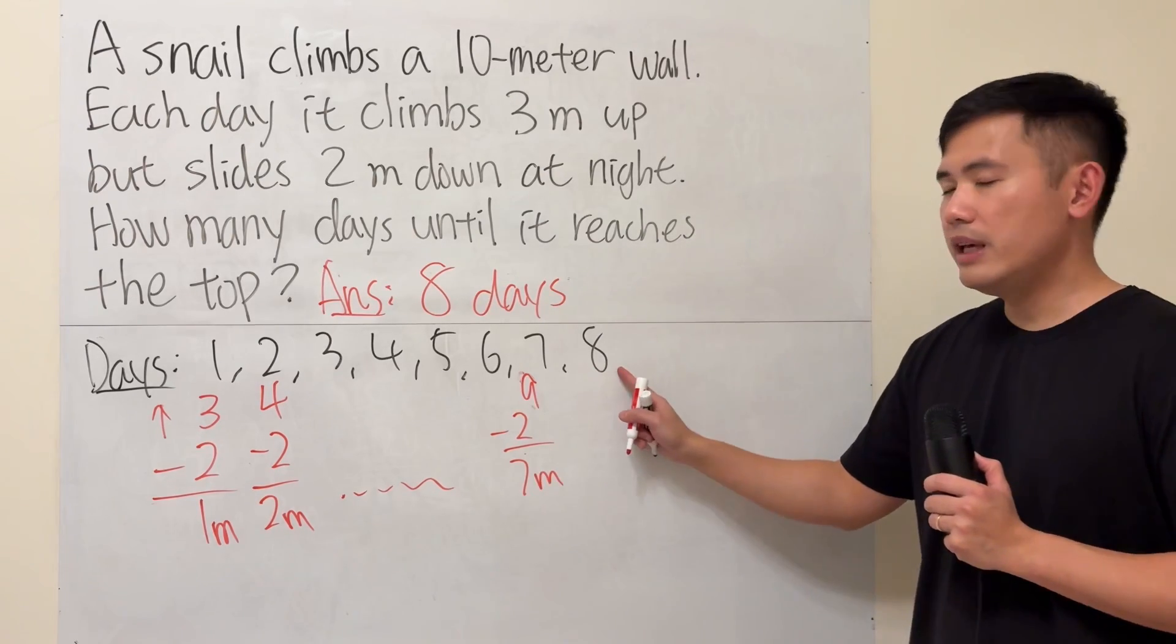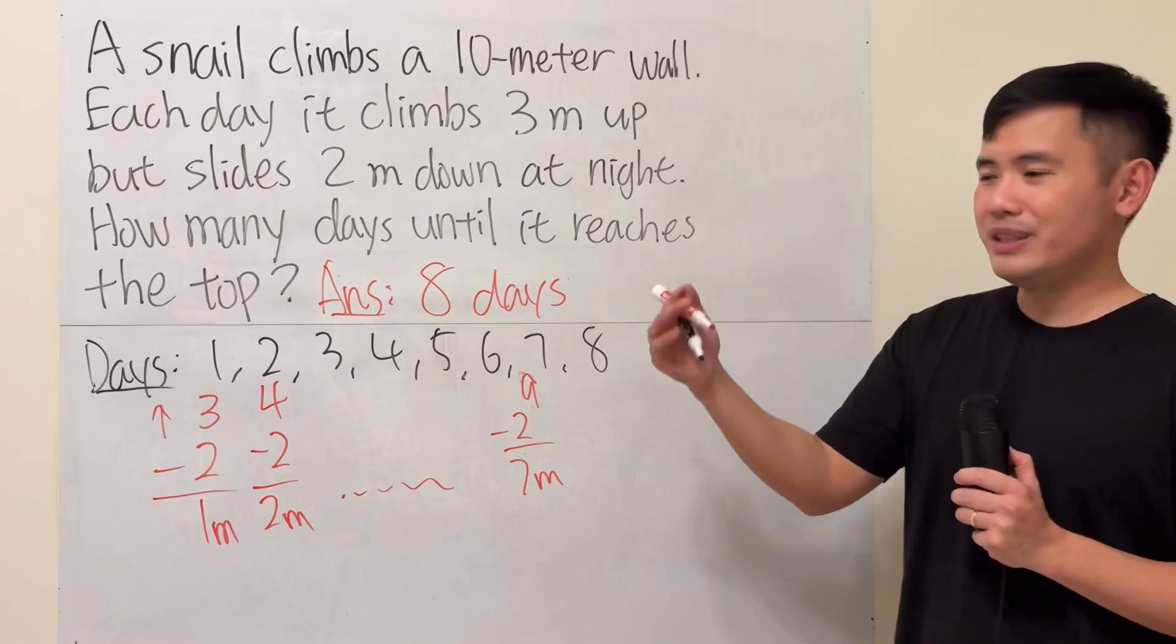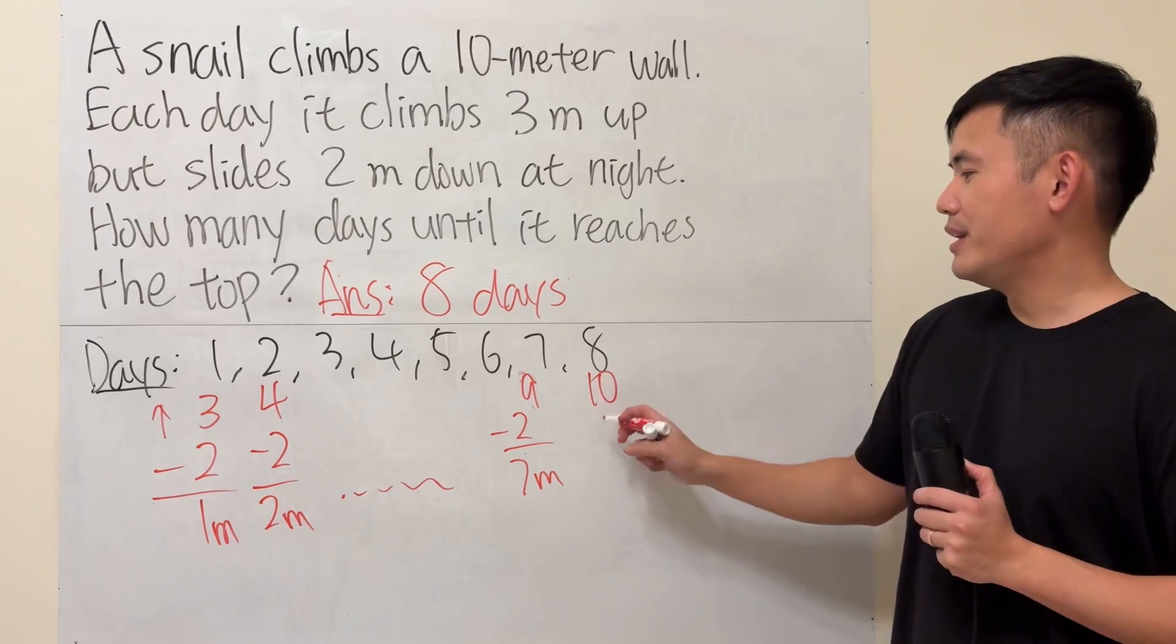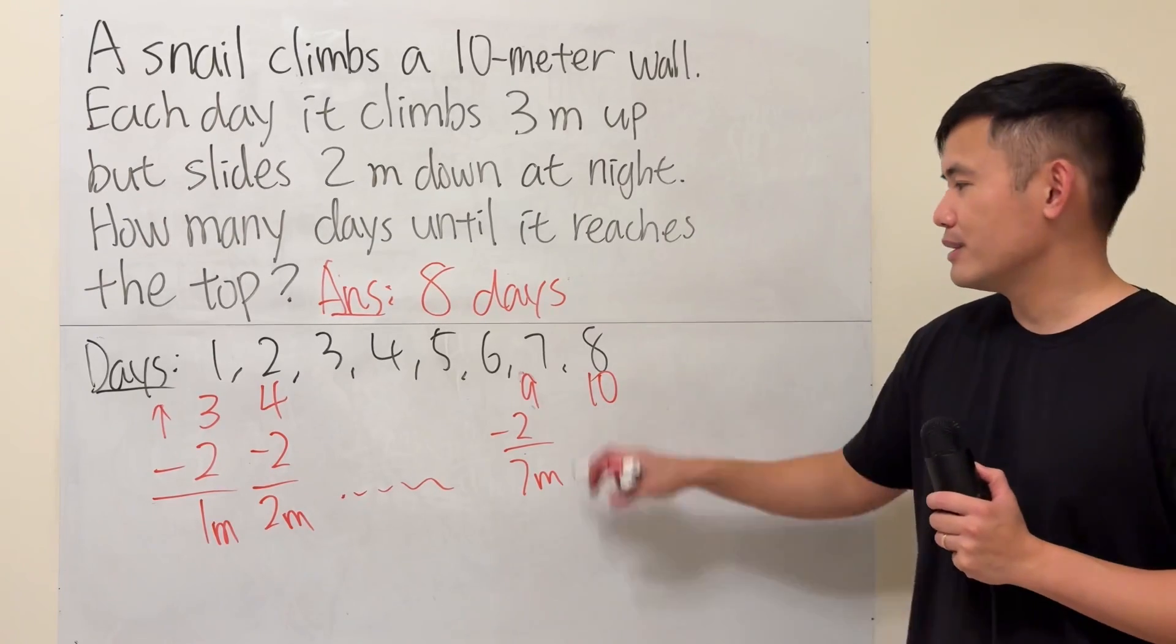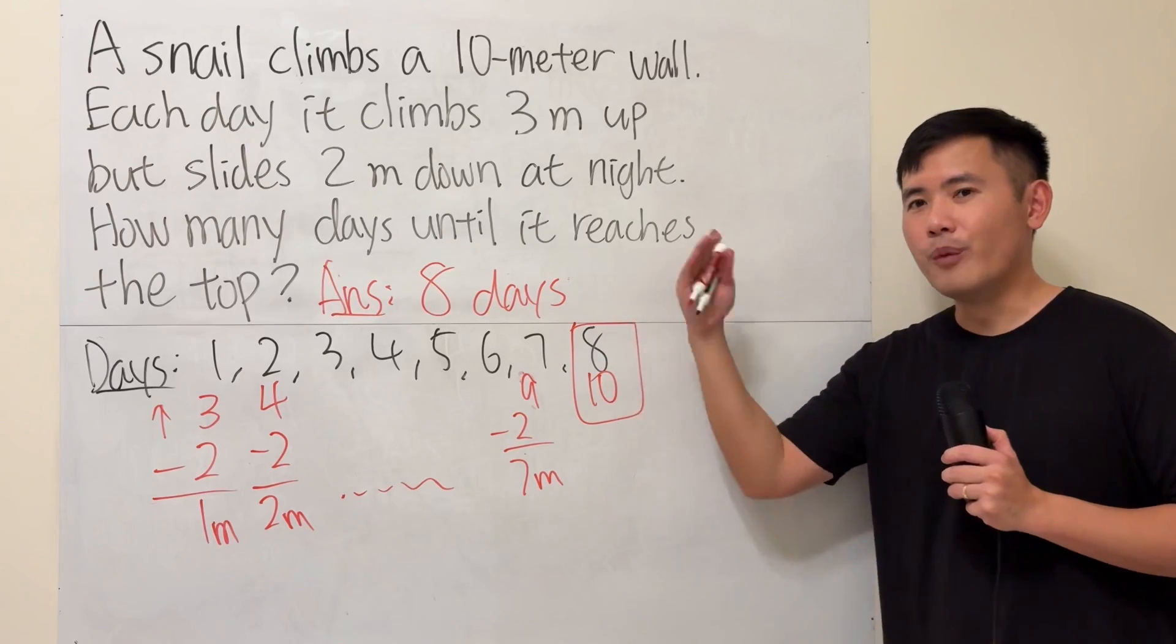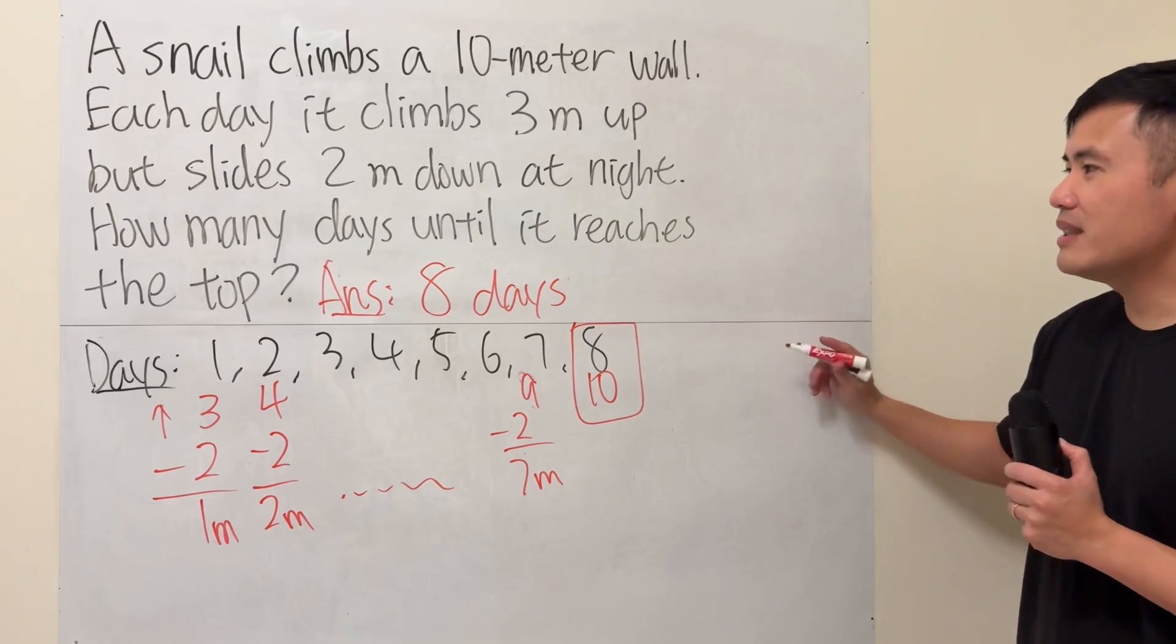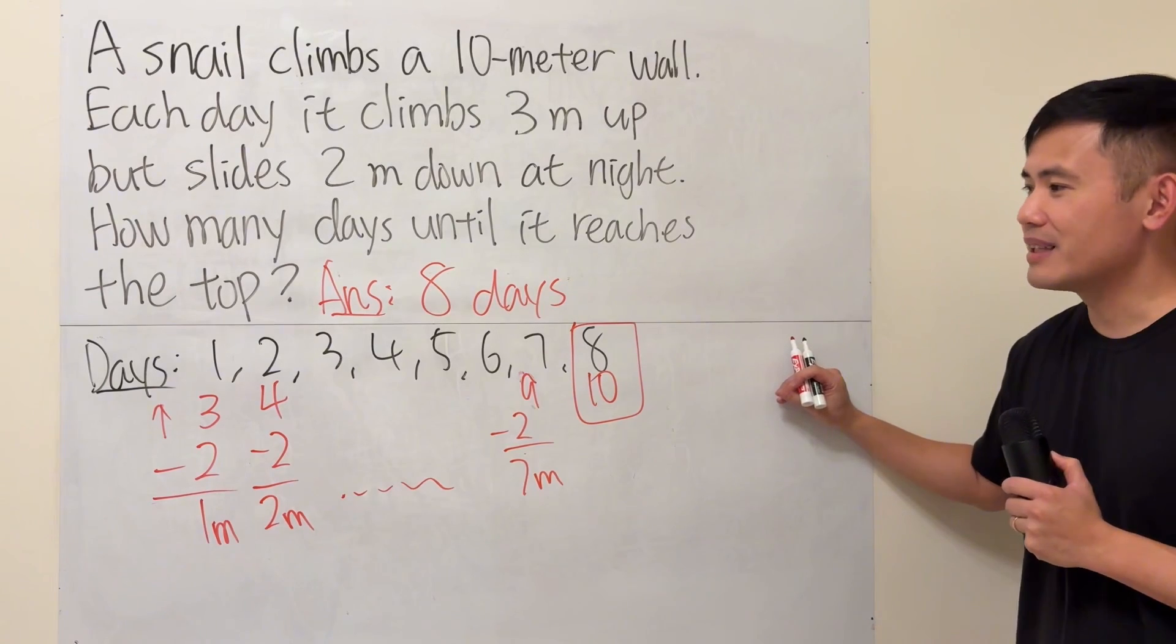Here. Once we get to the eighth day from 7, it goes up by 3. Congrats! We hit the tenth meter mark. And we don't have to let it go down. This is it. Done. It's like the eighth day morning. So how many days until it reaches the end? 8. I think it will be the correct answer for that.